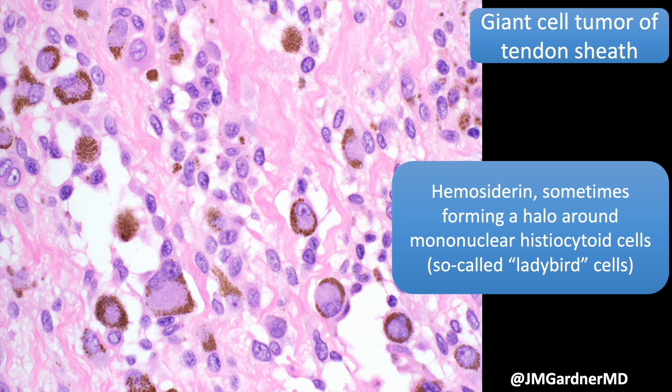When you see these, you're done, because I don't think there's any other tumor that looks like this except for tenosynovial giant cell tumor — either the localized giant cell tumor tendon sheath form, or the diffuse form that occurs deep in the joint in the more proximal joints, called pigmented villonodular synovitis, which we're not going to go into today because it's outside the scope of derm path.